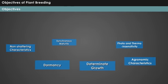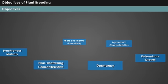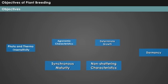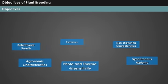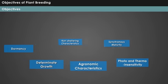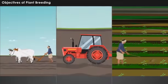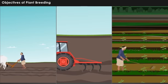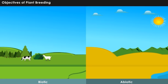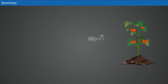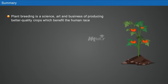The objectives discussed so far are considered the most important ones of plant breeding. However, they may constantly get modified owing to unavoidable changes in agricultural practices followed by agriculturalists, the biotic and abiotic environment of the cultivating region, and consumer needs. In summary, plant breeding is a science, art and business of producing better quality crops which benefit the human race.